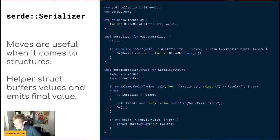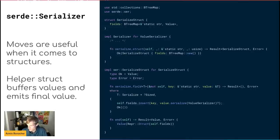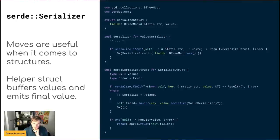This is an example of how a Serializer doesn't have to create bytes — it can create a whole bunch of other interesting things. What's important to notice again: because the end method consumes, you can move out the fields from the SerializeStruct. If it couldn't consume, you would have to do other stuff like move out of an option, but this is quite convenient.